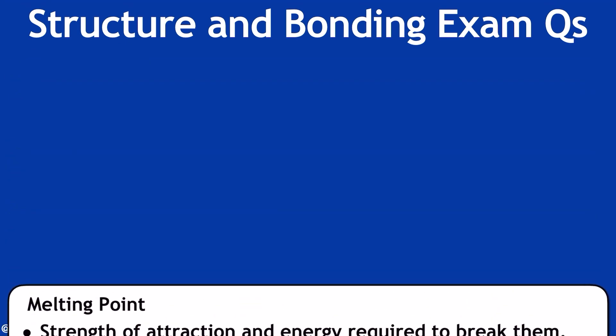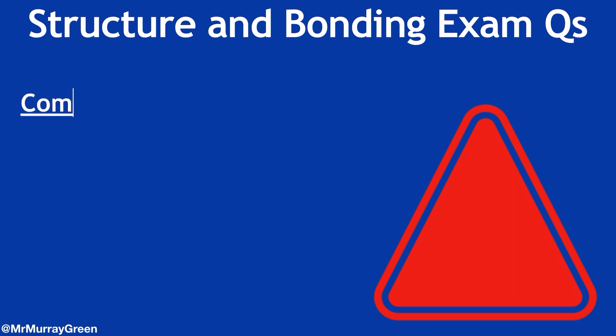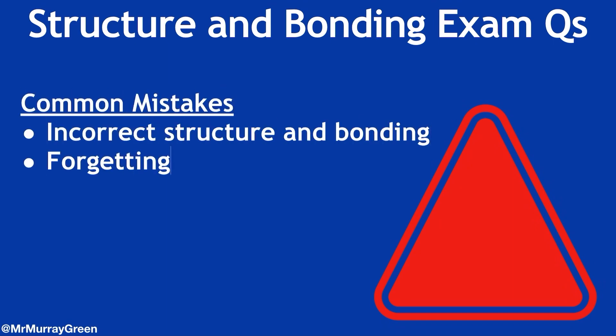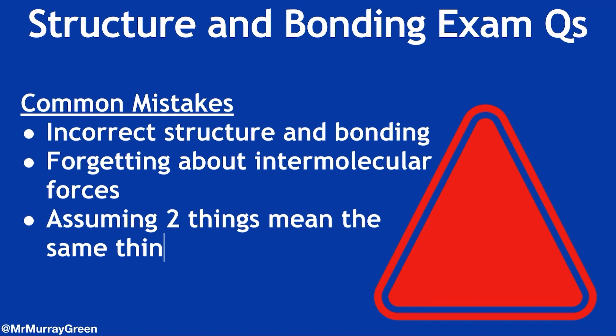Before we finish up, let's have a look at some common mistakes and misconceptions I really need you to avoid. First off, lots of people incorrectly allocate the structure and bonding. Make sure you've got a technique set aside to ensure you're saying the right substances have got the right structure and bonding. I don't see anyone saying that KBr has got strong intermolecular forces, for example. It's a giant ionic lattice structure. It's just got those ionic bonds.